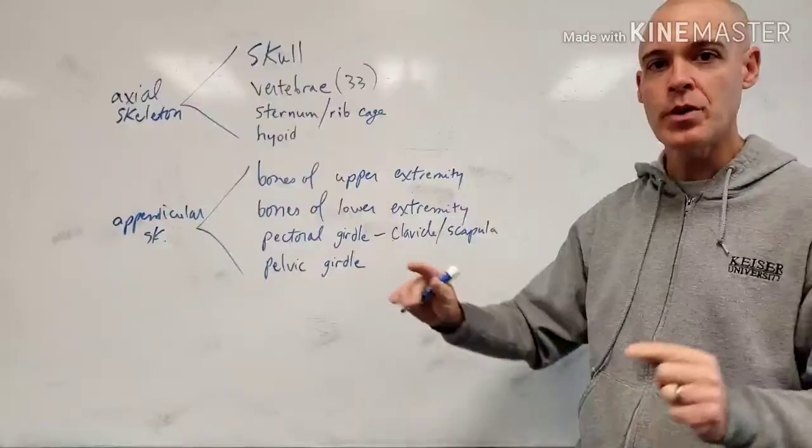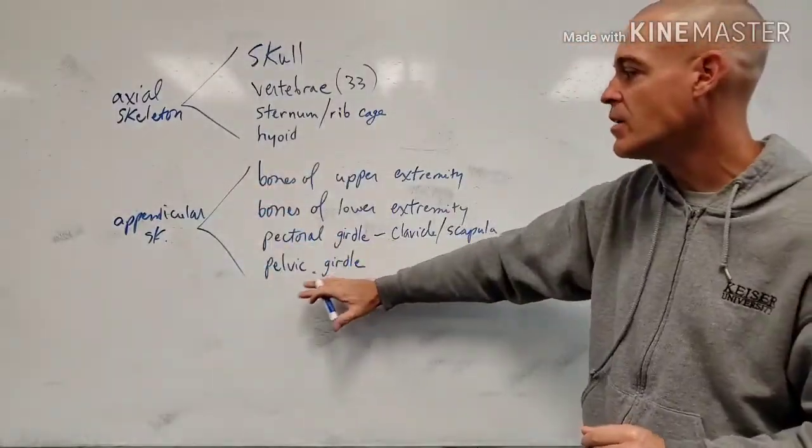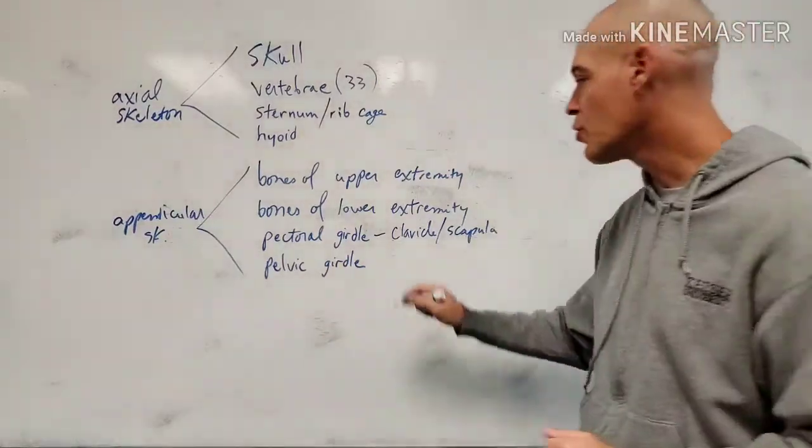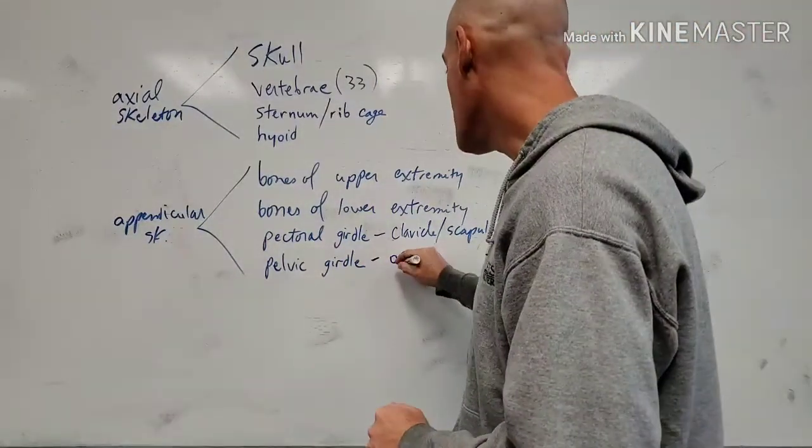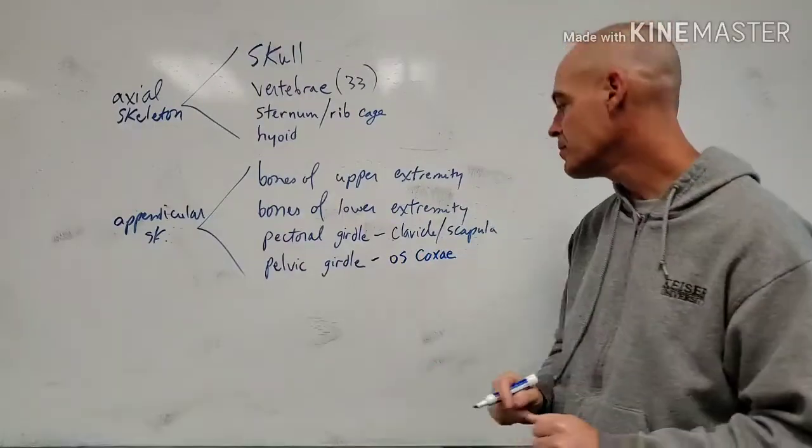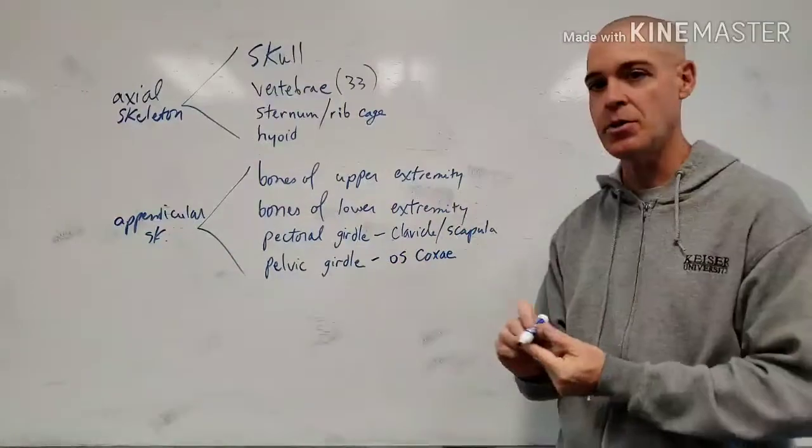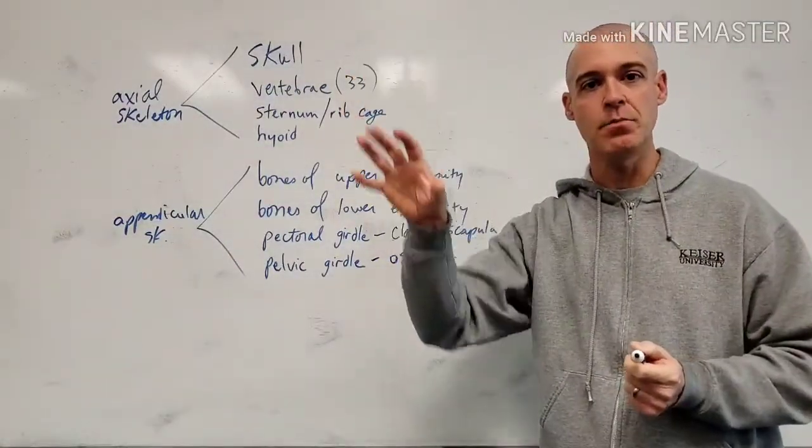What about the pelvic girdle? Really only one set of bones are part of the appendicular skeleton within the pelvic girdle. And those would be the oscoxae. That's plural, so there's two of them. The two oscoxae, which are made up of three parts: ilium, ischium, and pubis.